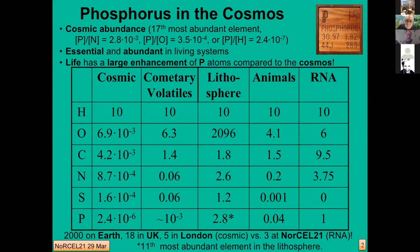If we were to think about the population of Earth given these numbers, we would expect to see out of the billions of people on Earth maybe 2,000 phosphorus people, there would be 18 on average in the UK, five in London, according to the cosmic abundance. But with 90 or so people attending this conference, we might expect to see three phosphorus people in the audience here.